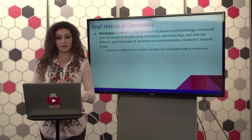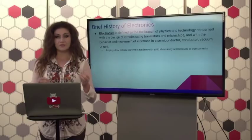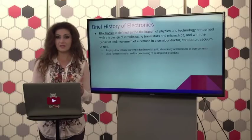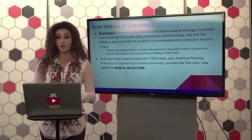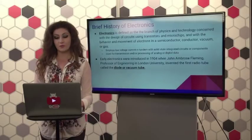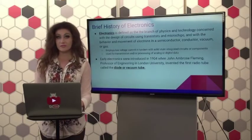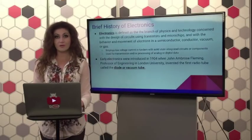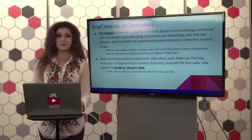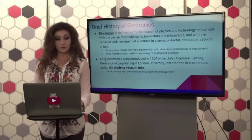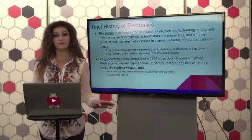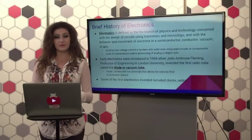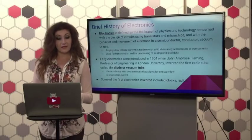Basically, electronics employ low voltage current in combination with solid state and integrated circuits or components. Electronics transmit and process analog data with digital data. Early electronics were introduced in 1904 when John Ambrose Fleming, a professor of engineering at London University, invented the first radio tube called the diode — or the vacuum tube. A diode, where the prefix 'di' means two, is a device with two terminals that allows a one-way flow of electric current. After this, triodes were invented, and John Fleming is known for creating the very first vacuum tube.